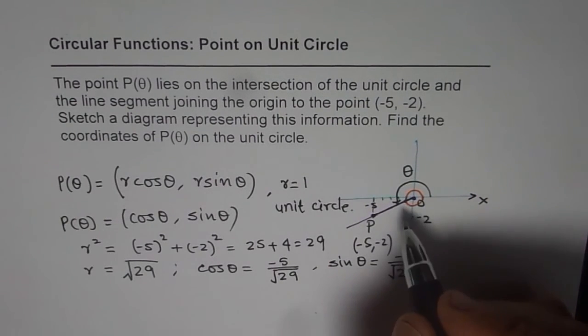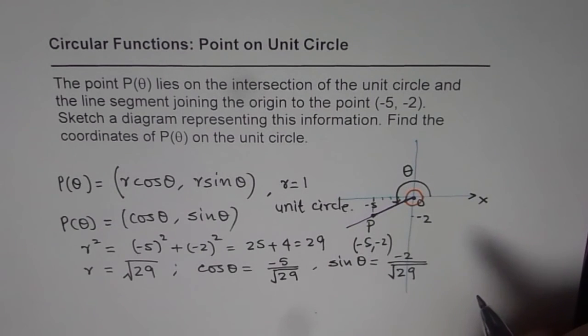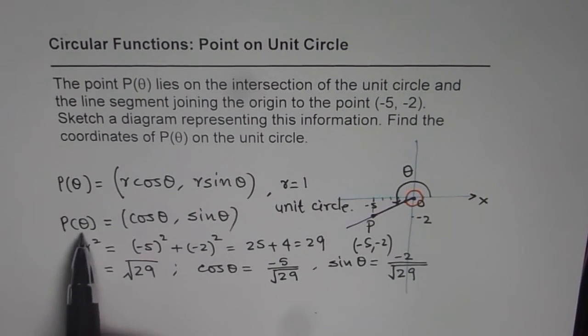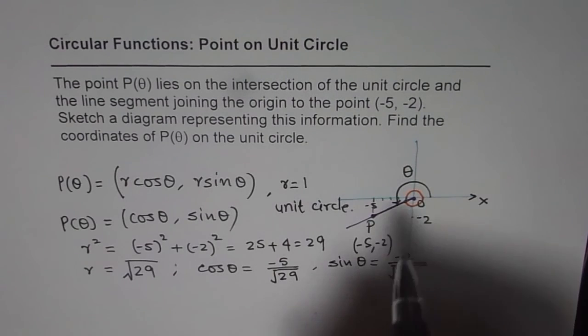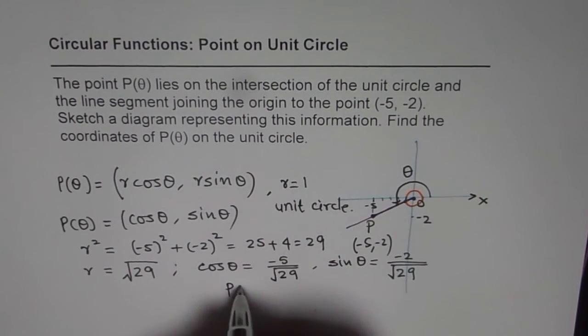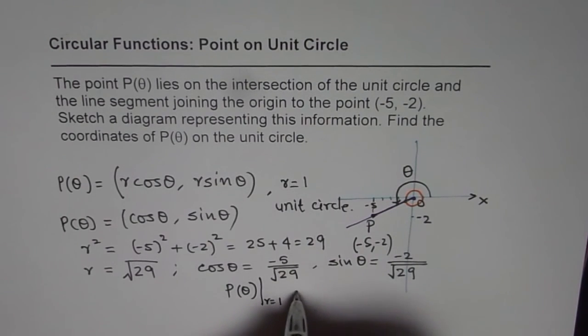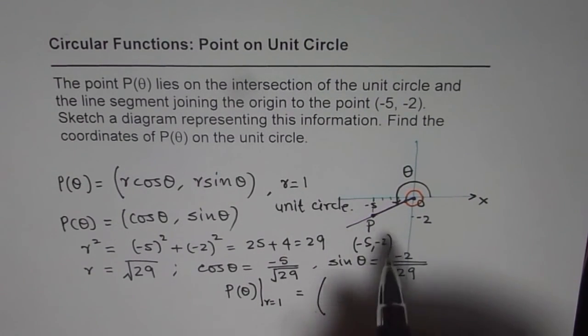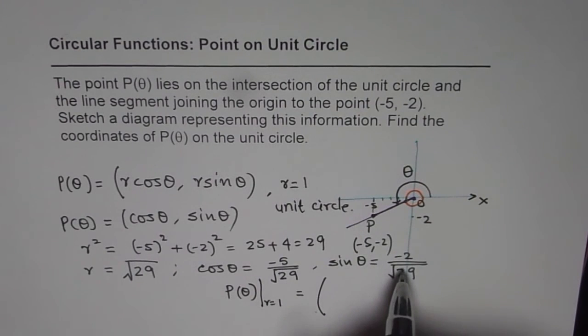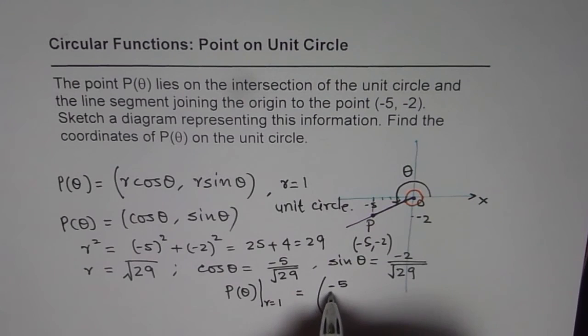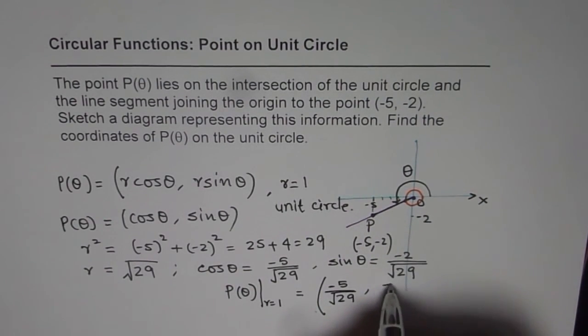So that actually gives us the coordinate on the unit circle. The coordinate on the unit circle will be (cos θ, sin θ). So what is the coordinate on the unit circle for us? P(θ) when r equals to 1 is equal to (-5/√29, -2/√29). We are in quadrant 3 and both values are negative, so that is also for you to check whether we are going on the right track or not.